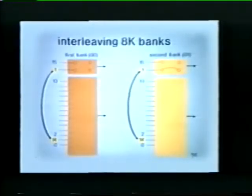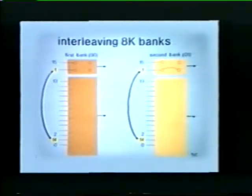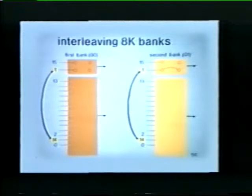Interleaving is accomplished by swapping certain address bits in the memory's decoding network. For example, bits 1 and 14 are swapped if we wish to interleave a pair of 8K memory banks. Note that in this example we've interleaved the first and second banks of memory.